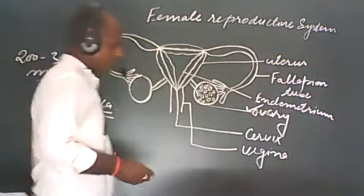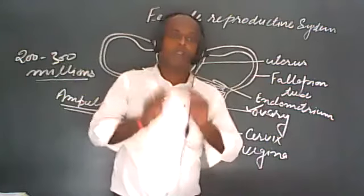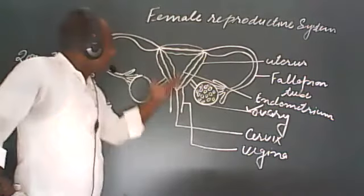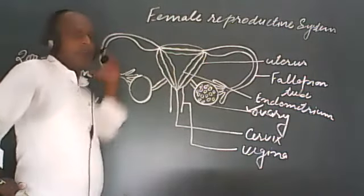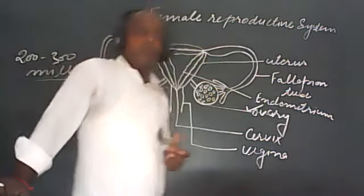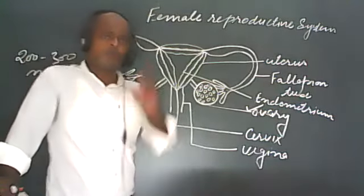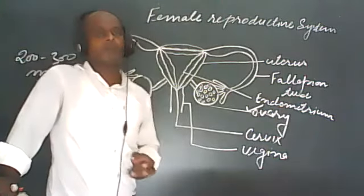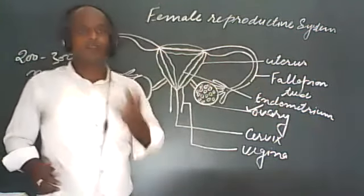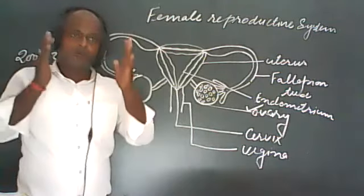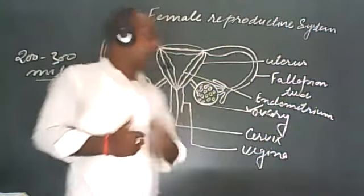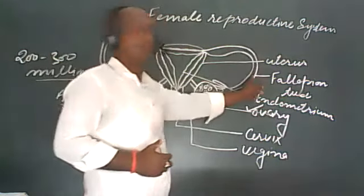When the sperms are stored in the vaginal tract of the female, most of the sperms are killed by the secretion of different chemicals in the female reproductive organ. Only a very few number of sperms remain, and when these sperms reach into the fallopian tubes through the uterine wall, they start to fuse with the female gamete — the ovum — which is present in the fallopian tubes.